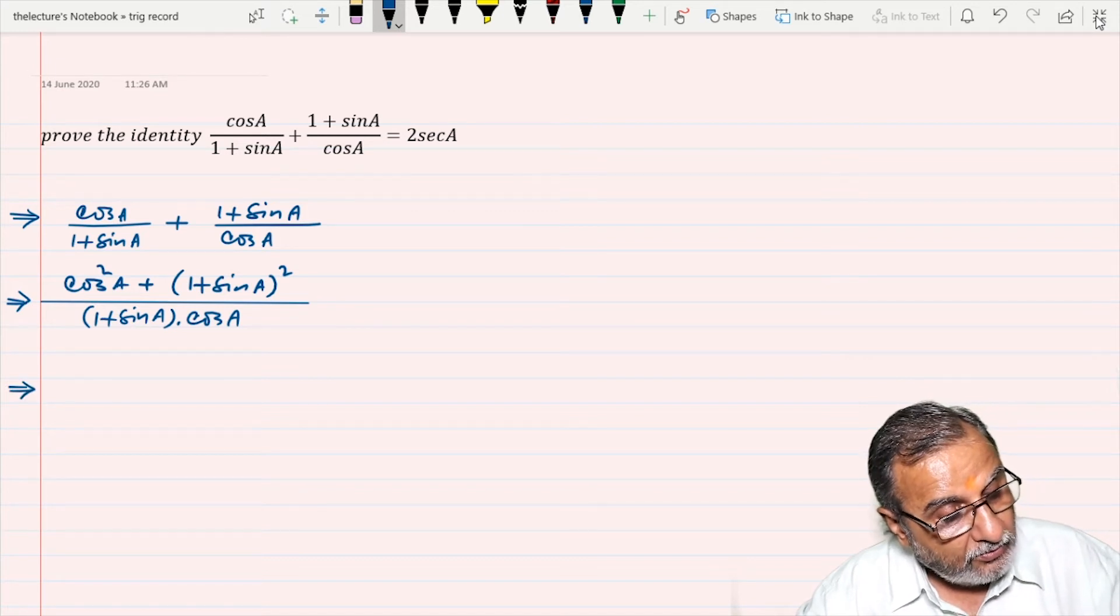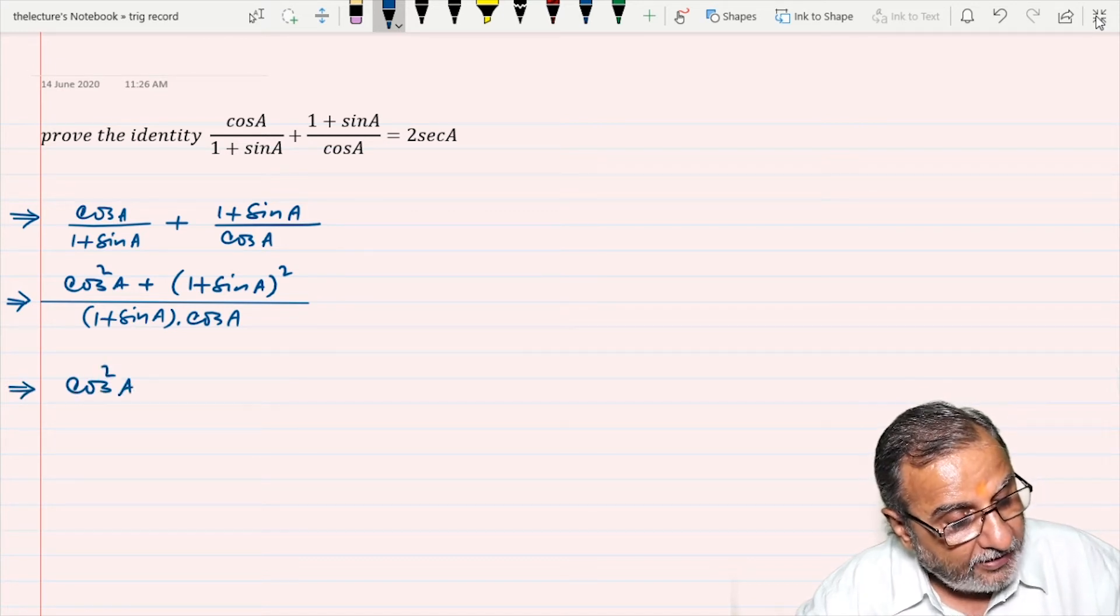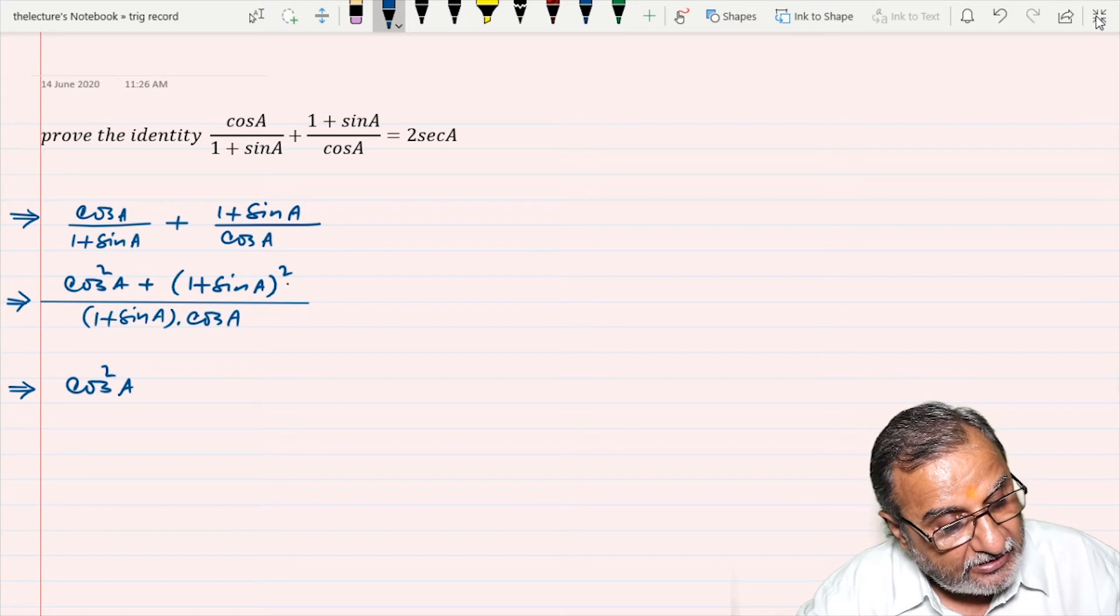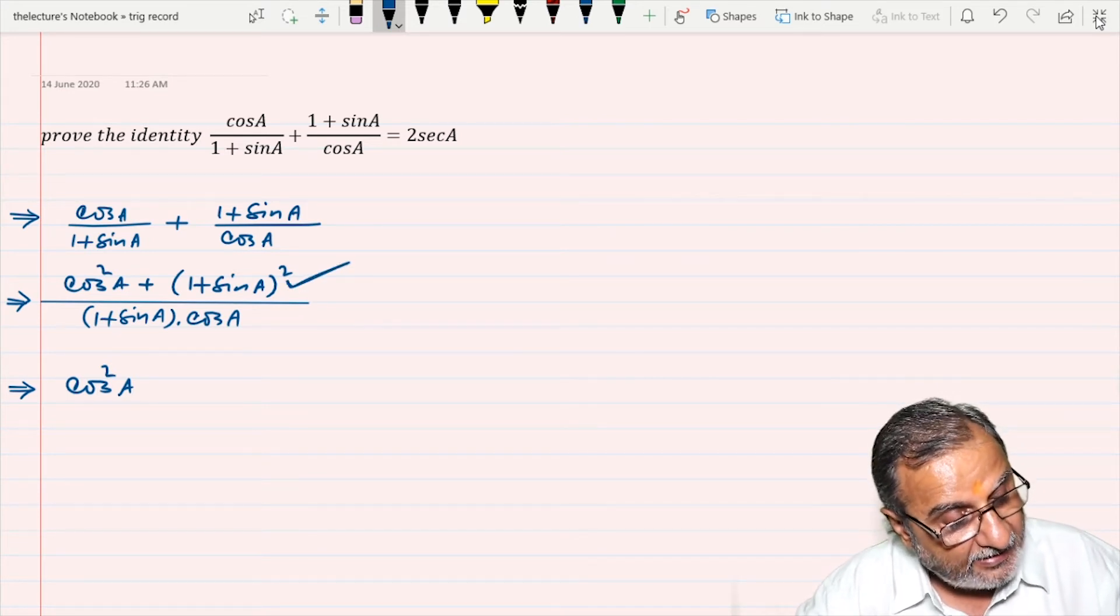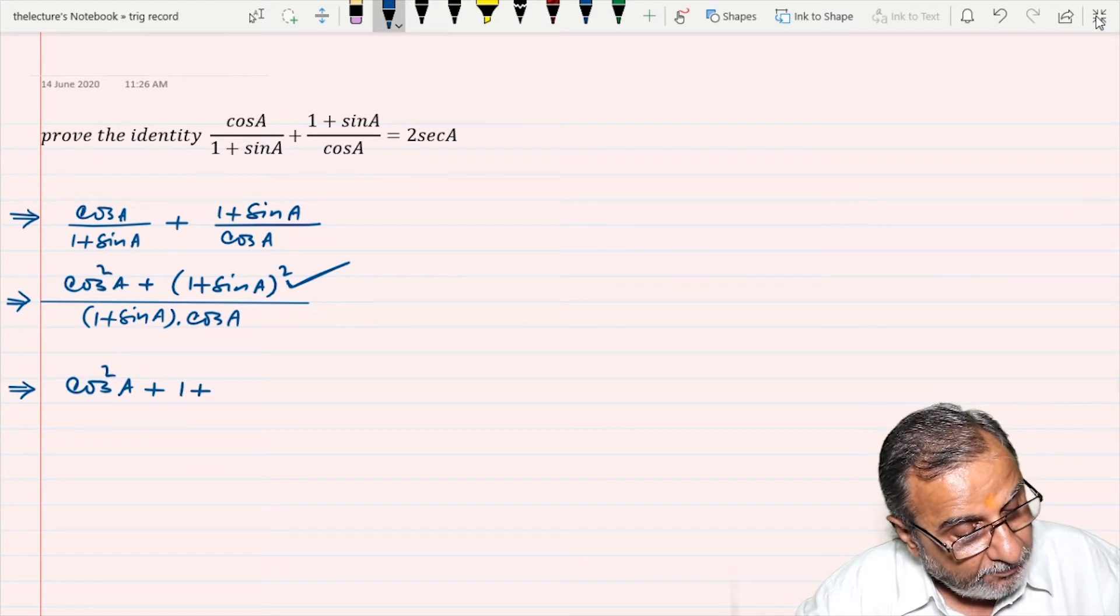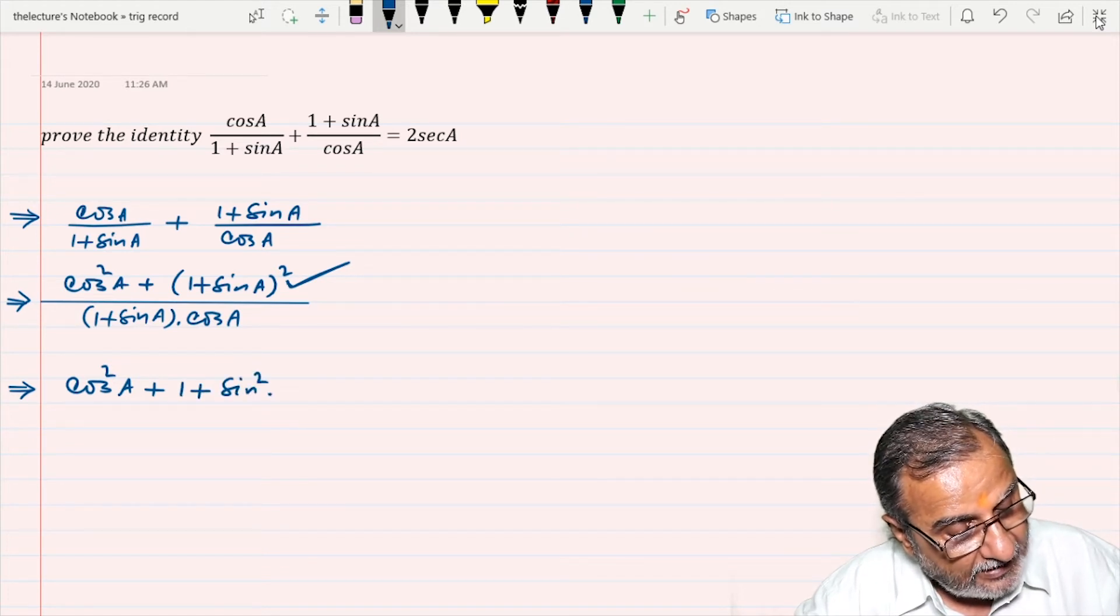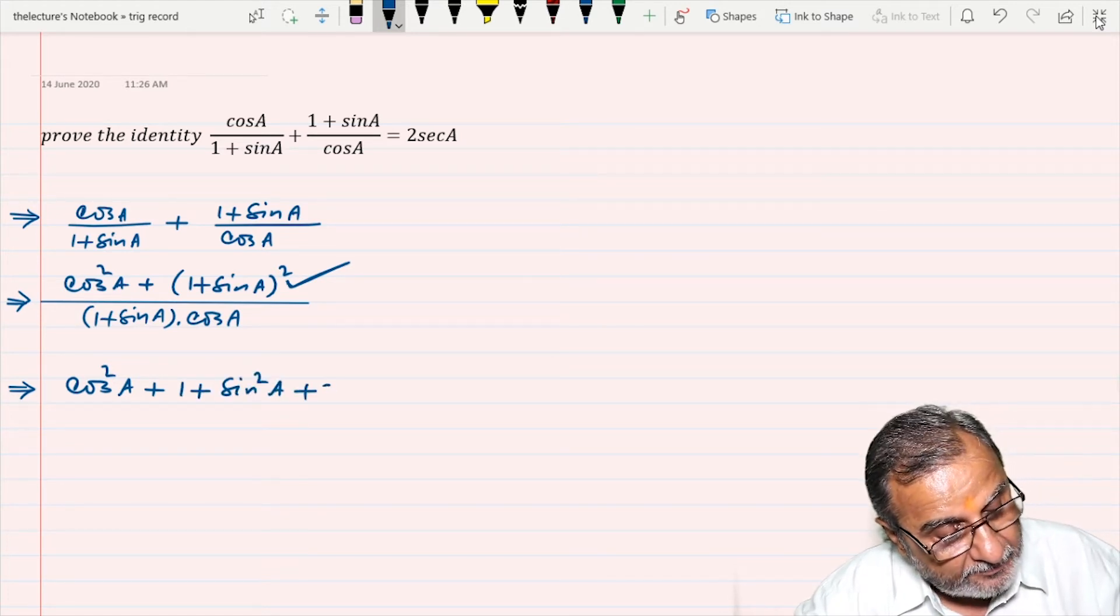So now cos² A, and I will expand the (A + B)² formula: that is 1 + sin² A + 2 sin A.